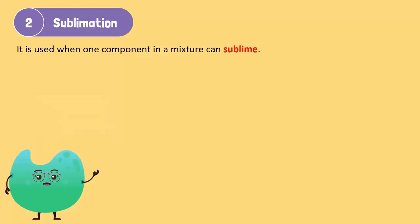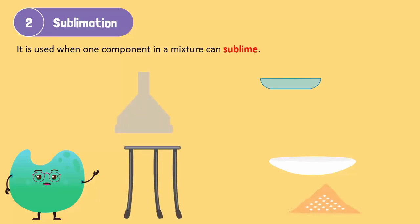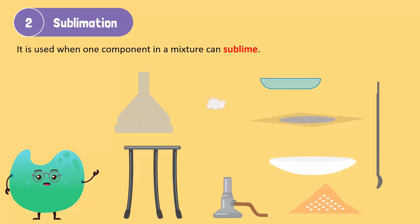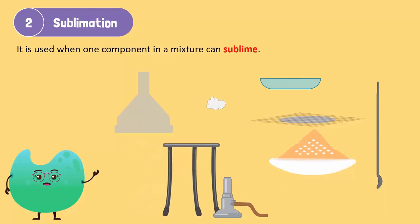Let's see how this works. Time to experiment. You will need a china dish, watch glass, sand and naphthalene mixture, funnel, tripod stand, spatula, Bunsen burner, wire gauze, and cotton. Put the mixture of naphthalene and sand in a china dish.